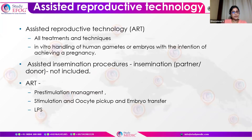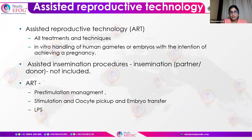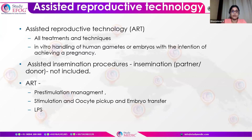Assisted reproductive technology includes multiple different parts, of which pre-stimulation management is important, followed by stimulation of the ovaries, then oocyte pickup and embryo transfer, which would be followed with the luteal phase support. The stimulation protocols would also be covered.